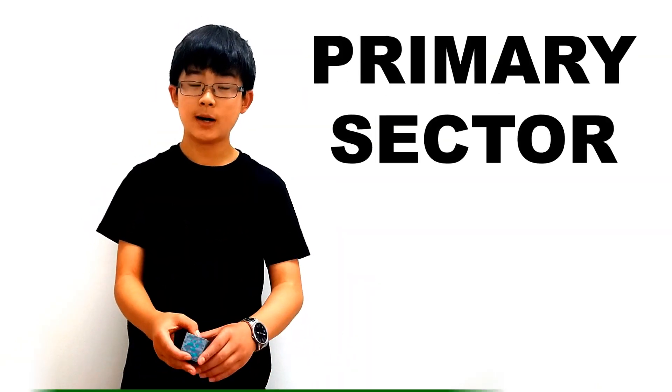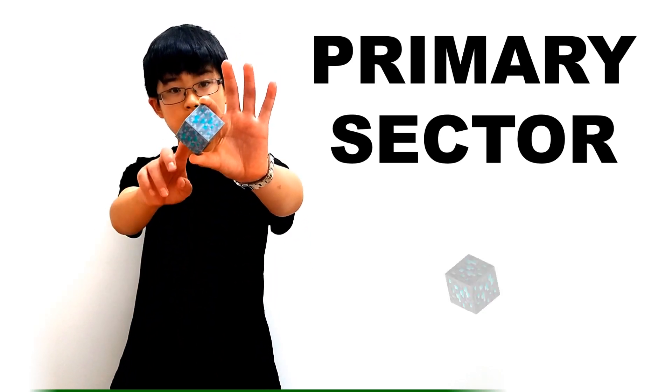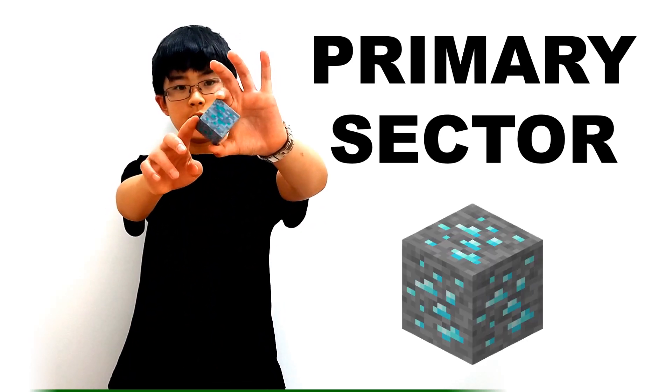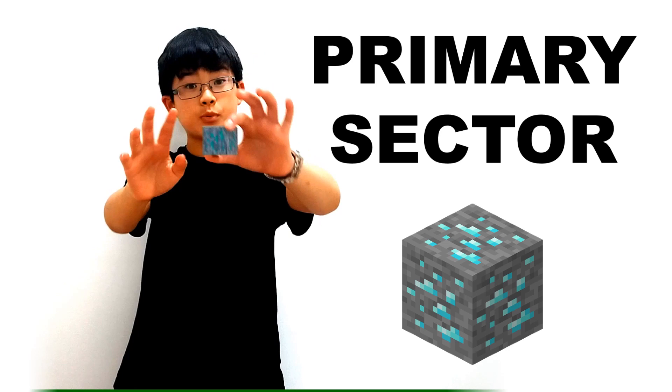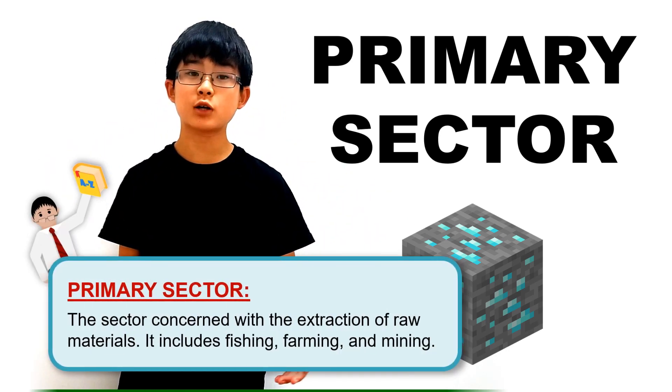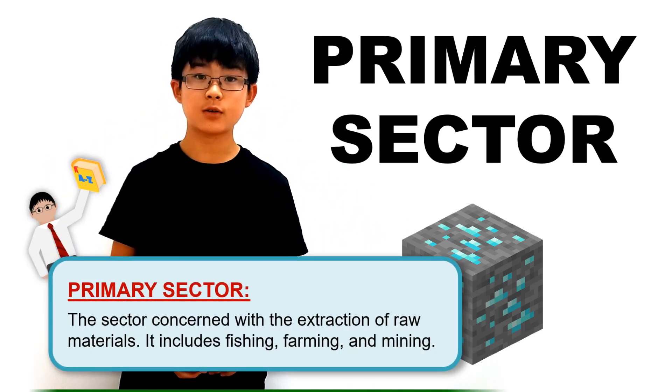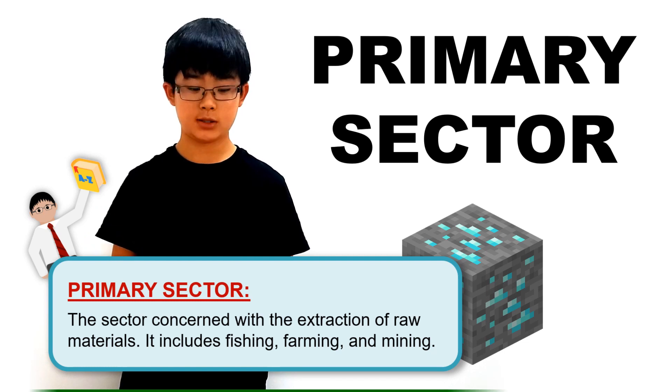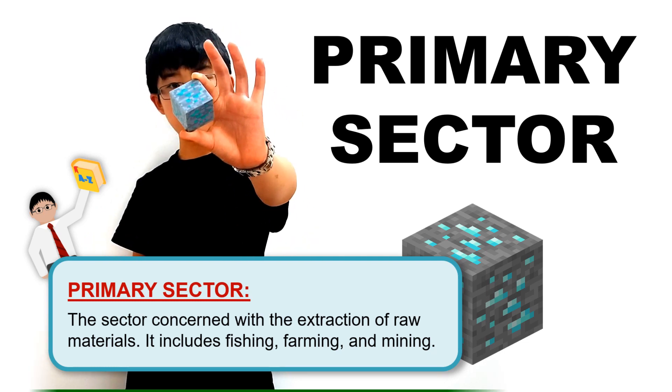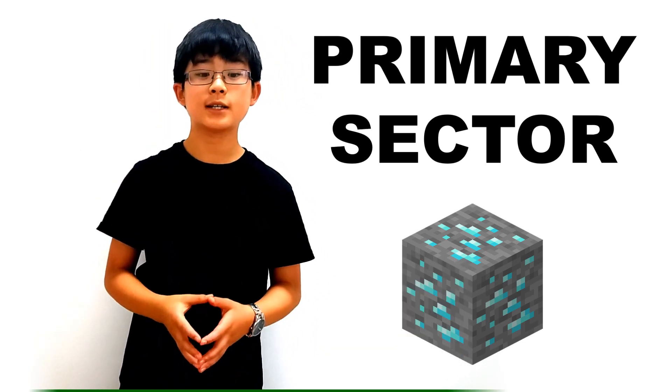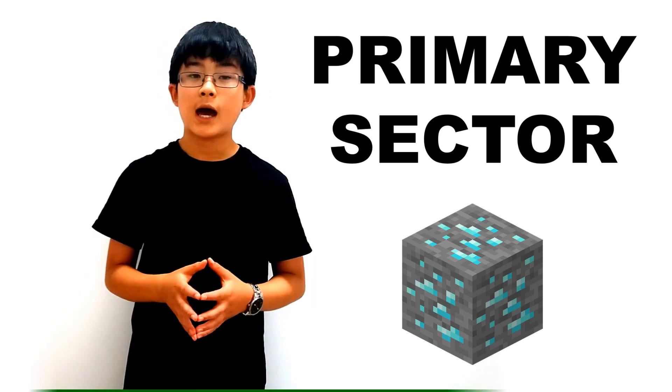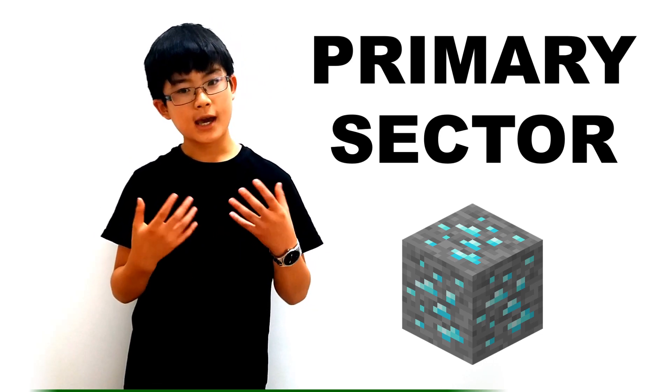Starting with the primary sector, I'm going to use this diamond ore to show the primary sector. Because the primary sector is concerned with the extraction of raw materials. So it's materials that haven't been processed yet. The primary sector can include things like mining, like the ore, and fishing and agriculture, like the cow.